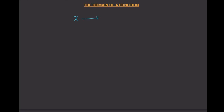Let's talk about the domain of a function. First, let's recall how functions work: a function takes an input x, plugs it into the function, and gives you an output f(x). Not all inputs will produce a valid output — sometimes it will produce an undefined term or a complex number. Since we're dealing with real-valued functions, any output that is not a real number is not considered valid.